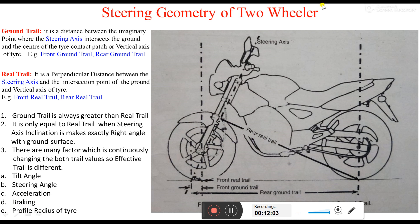So this is our steering geometry and those are the factors that affect trail values. The effect of trail will be covered in the next lecture. Thank you.